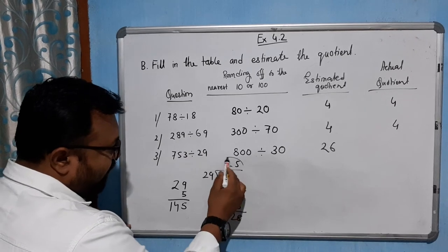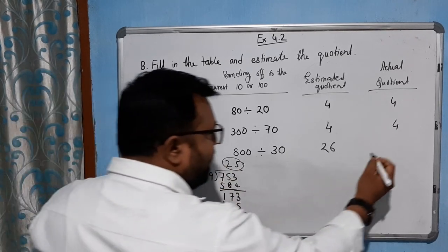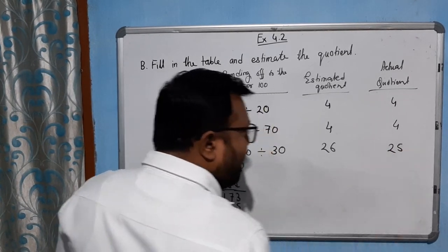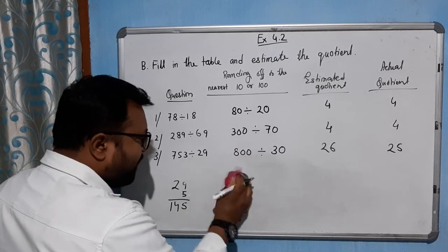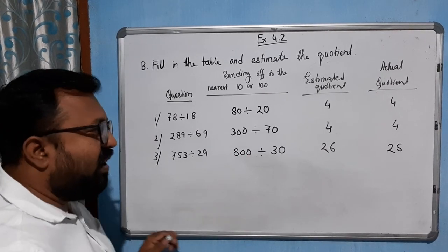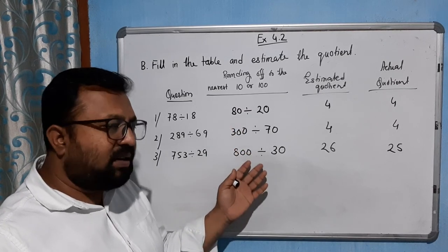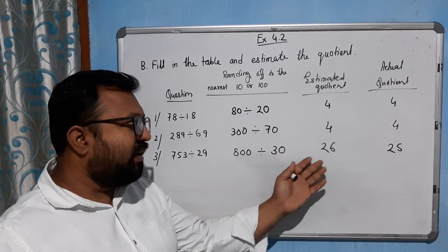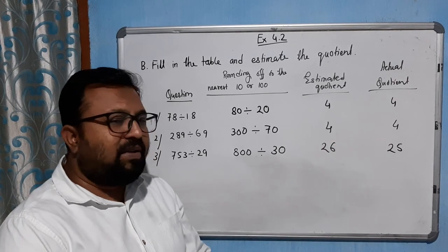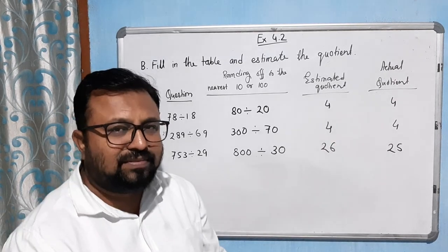So 25 is our actual quotient. Is that clear? Hope you guys have understood how we round up to the nearest 10 and 100, and how we find the estimated quotient and the actual quotient. Thank you.